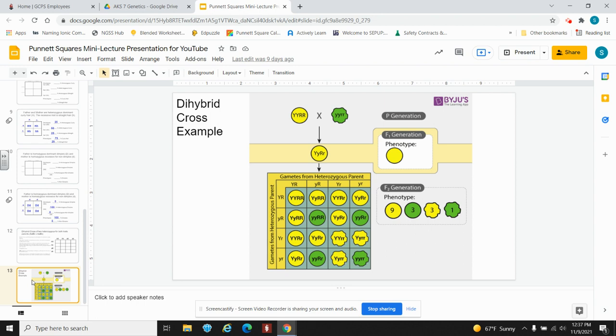The parent generation crossed a homozygous dominant yellow round pea with a homozygous round and wrinkled pea to get a double heterozygous yellow round pea. Two double heterozygous yellow round peas are crossed to make this dihybrid cross. The hybrid cross displays the results. So you can see the split alleles across the top and sides for each parent.